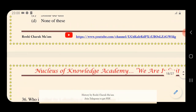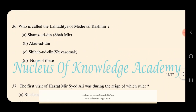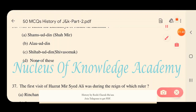Question 36: Who is called the Lalitaditya of medieval Kashmir? Options: A) Shamsuddin Shahmeer, B) Alauddin, C) Shihabuddin, D) None of these. The answer is C — Shihabuddin is called the Lalitaditya of medieval Kashmir.